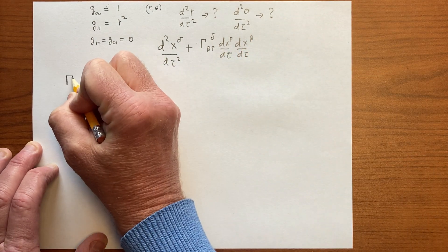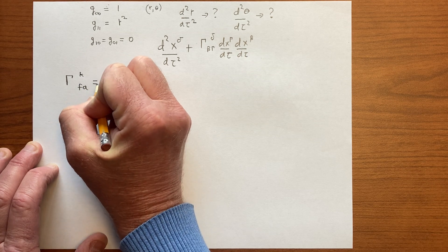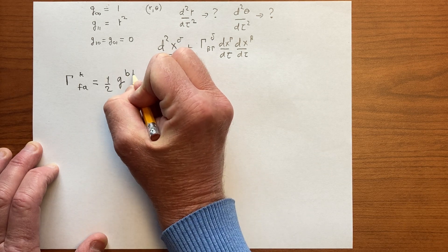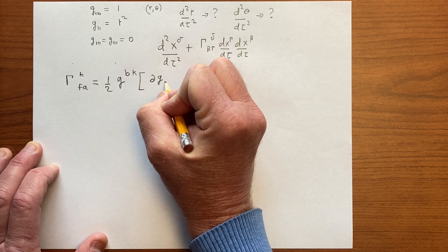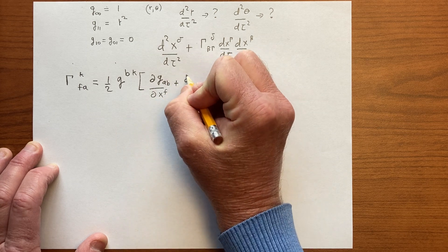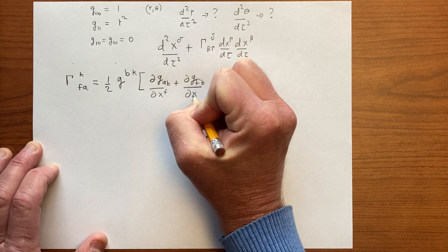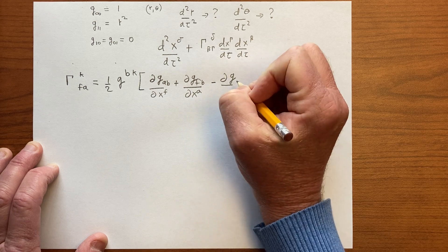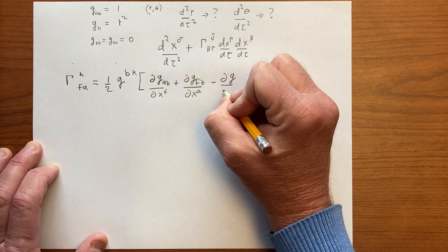And we know the connection, we've motivated the connection in these terms with the inverse metric g^bk and these partial derivatives. So we want to see what this looks like for a flat space situation, where the connections are not 0, because we are using polar coordinates.